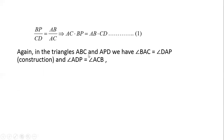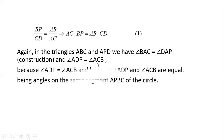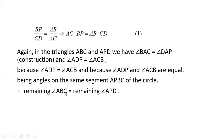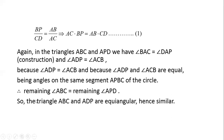Again, in triangles ABC and ADP, we have angle BAC equal to angle DAP by construction, and angle ADP equal to angle ACD because they are equal, being angles on the same segment APBC of the circle. So triangles ABC and ADP are equiangular, hence similar.